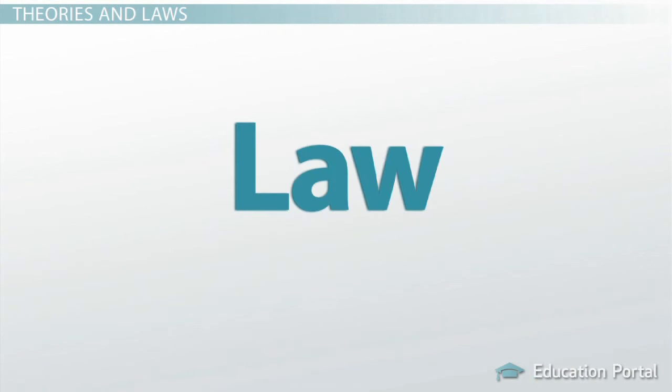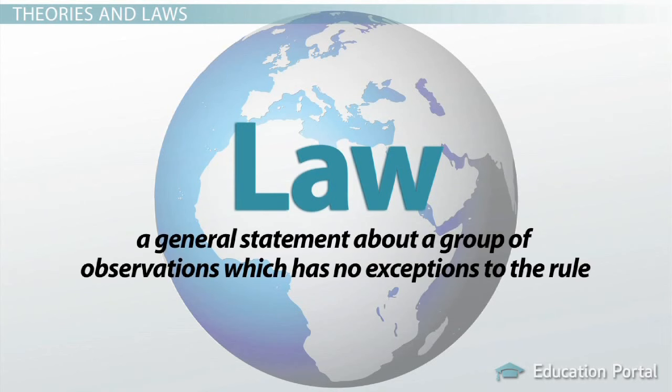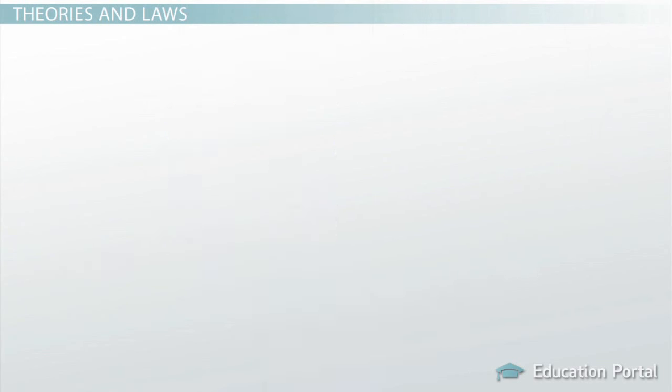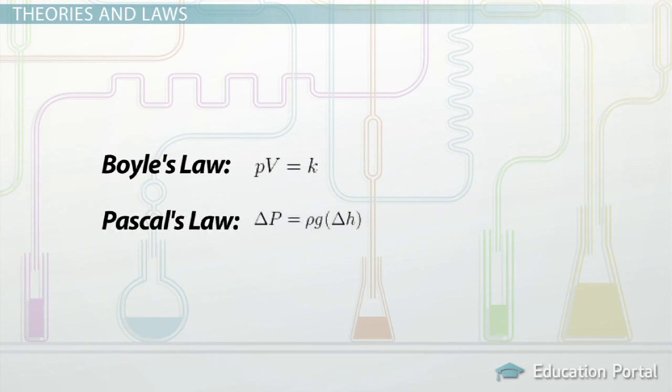A law is different from a theory in that it is viewed as a universal fact. A scientific law is a general statement about a group of observations which has no exceptions to the rule. Most laws can be stated as mathematical equations, like Boyle's law and Pascal's law. Laws in biology are statements about how living things work.